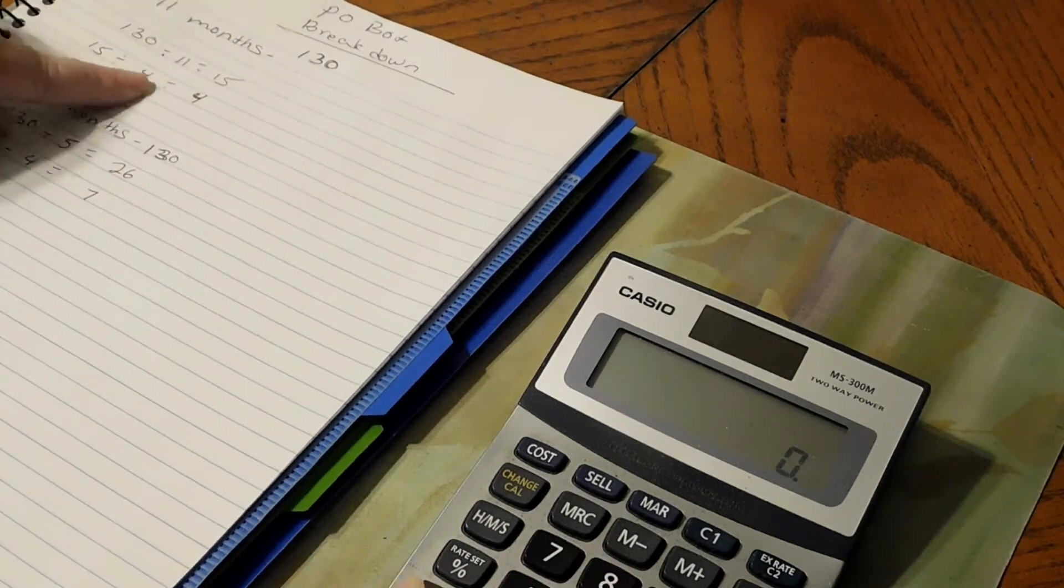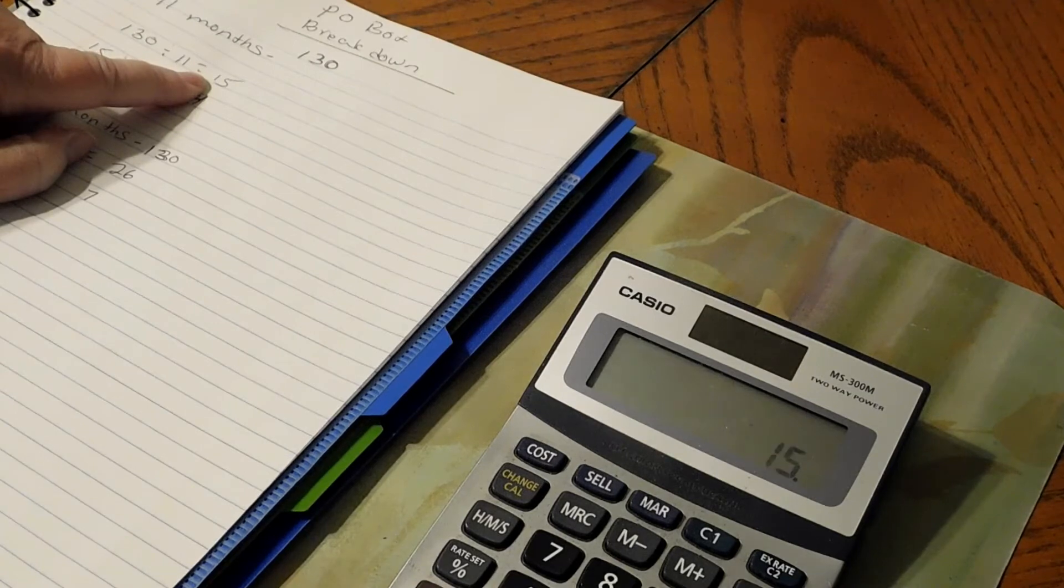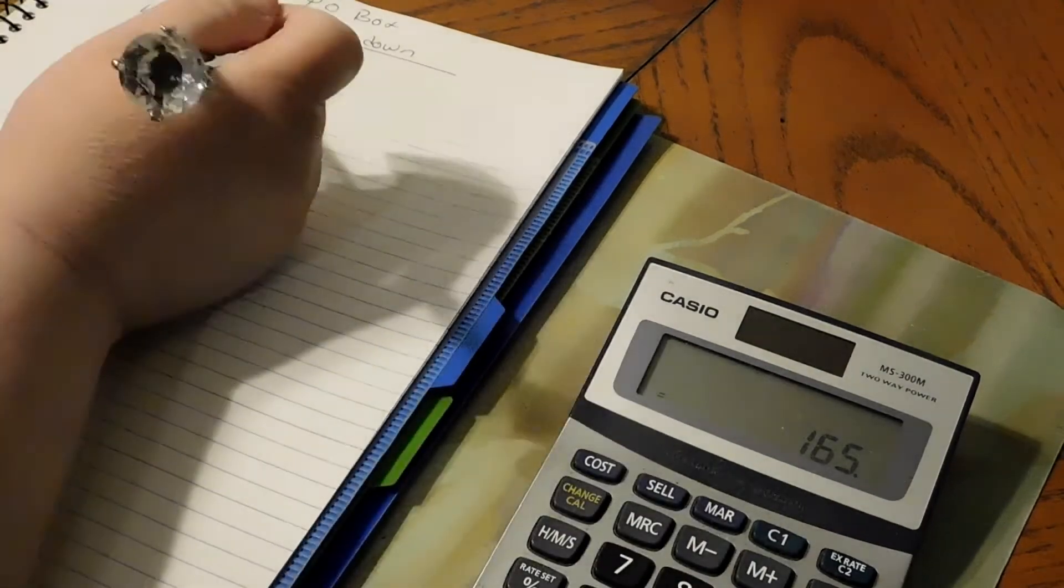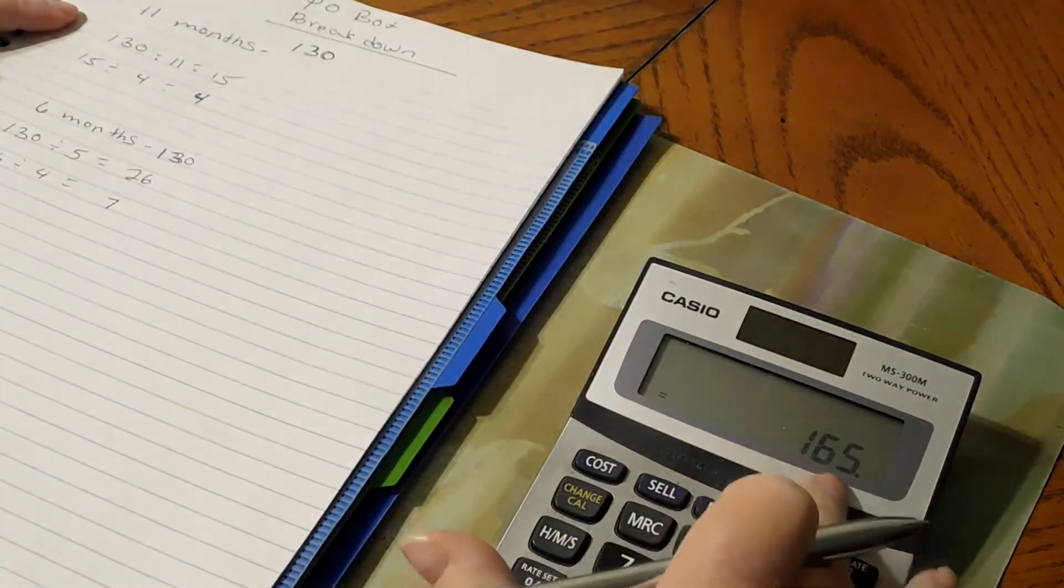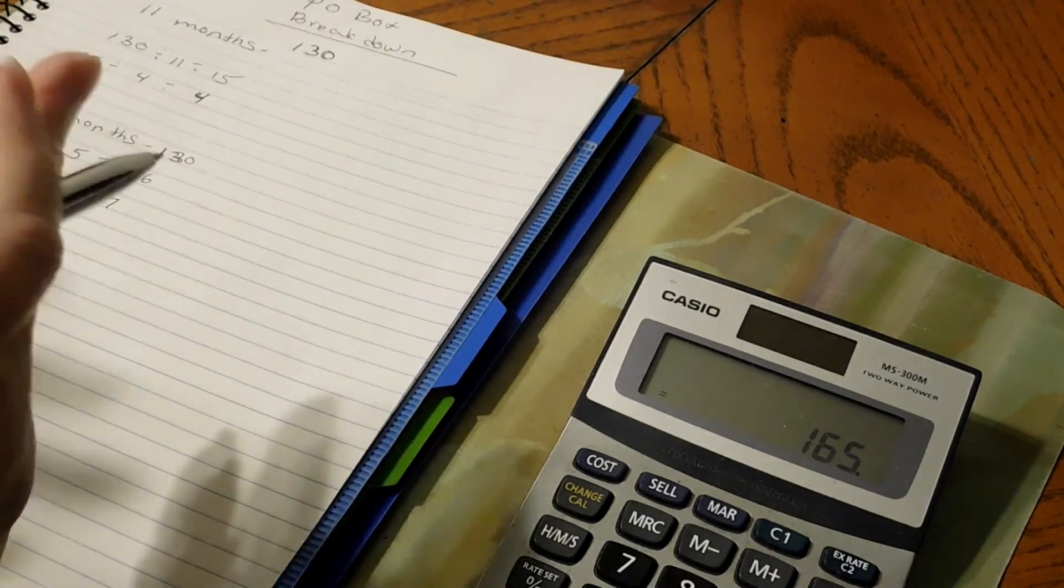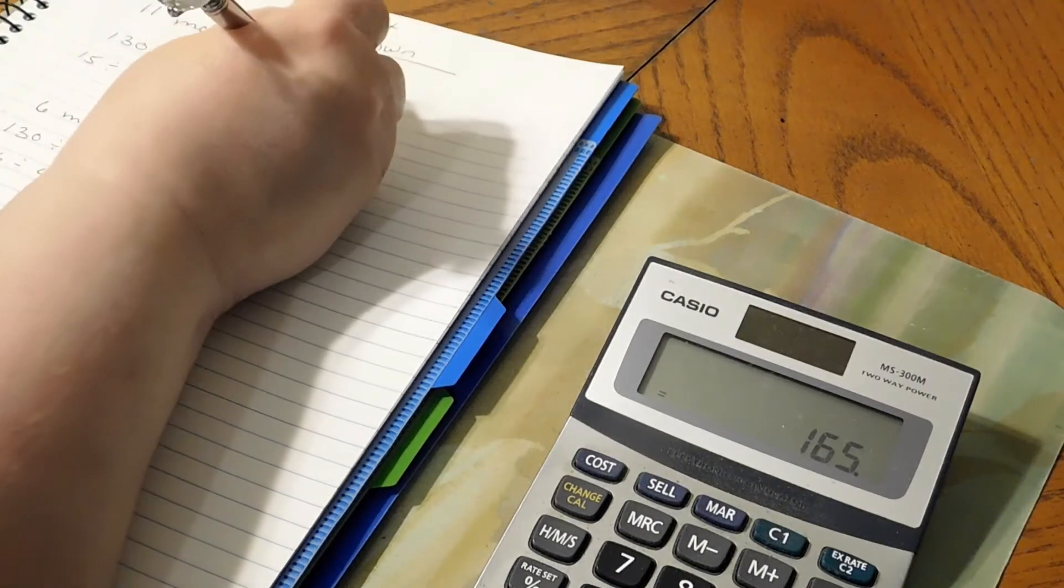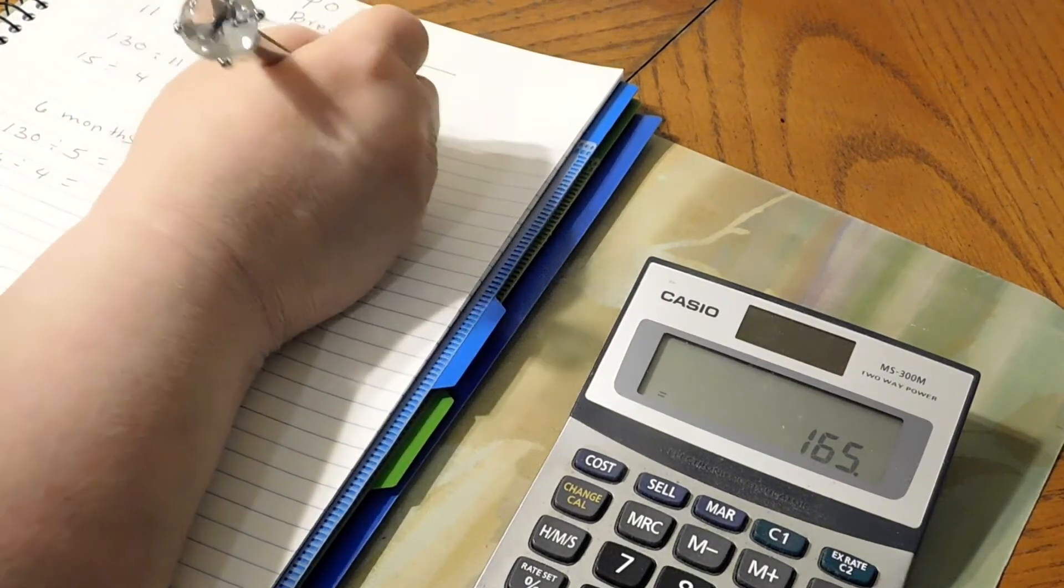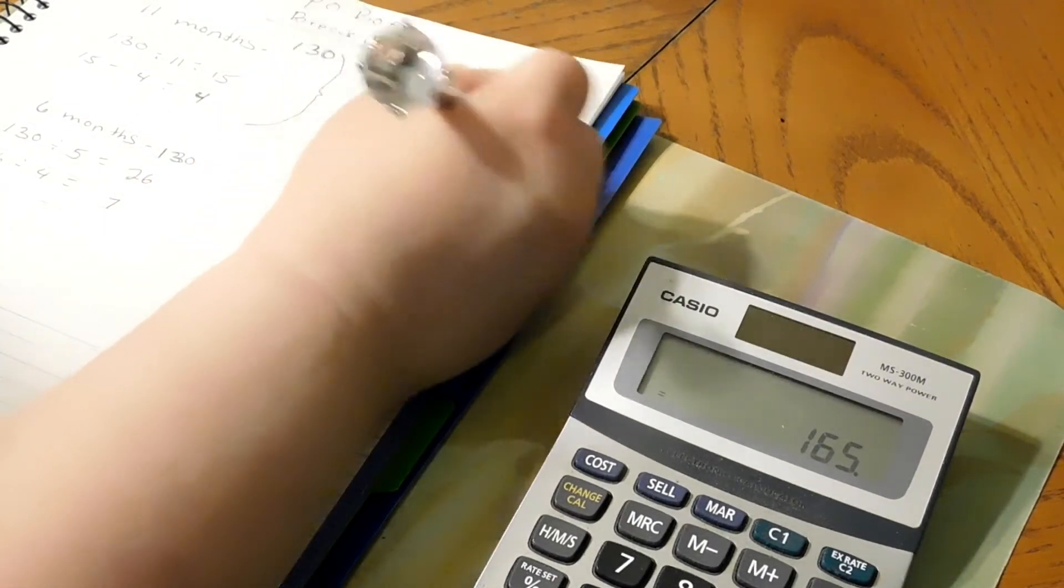So in the meantime when we have this, we're putting in $15 a month. So $15 times 11 months, you should have $165 for the 11 months, which should be more than enough in case the P.O. Box goes up. It'll be more than enough to cover that increase.